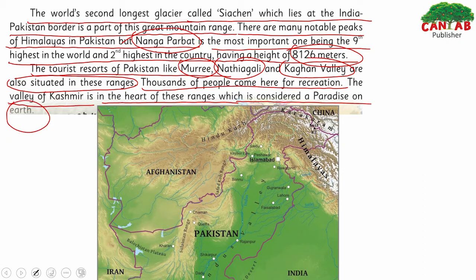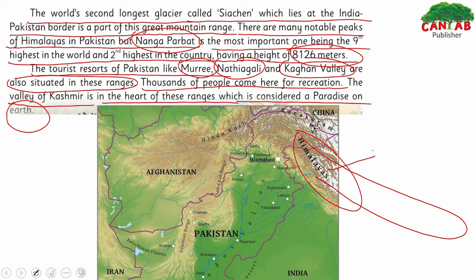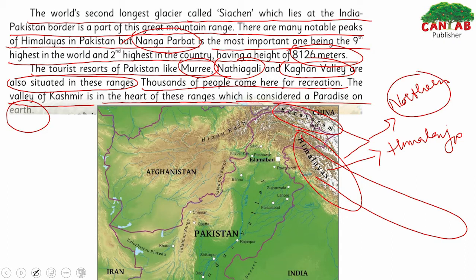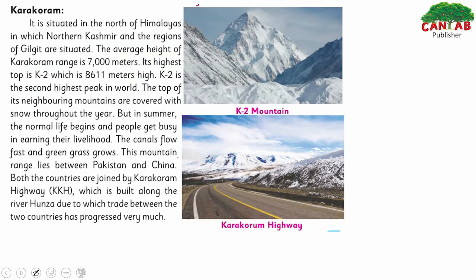Looking at the map of the Himalayas — these are the Himalayas shown here. On the northern side of Pakistan, the Karakoram ranges are visible. On one side are the Himalayan mountains, and in the north-west direction is the Hindu Kush range.